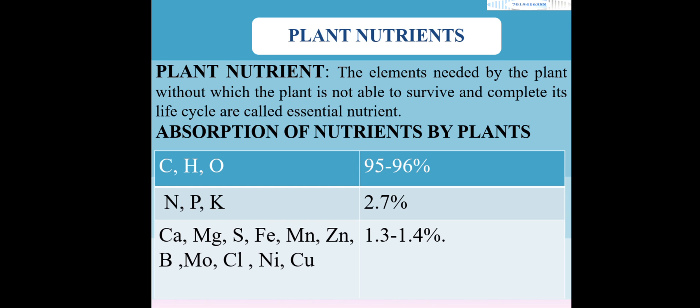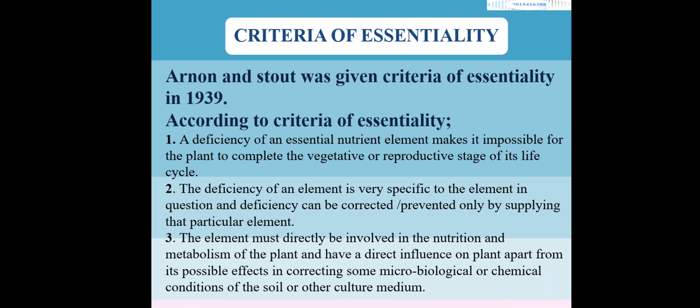All these nutrients combined are required in 1.3 to 1.4 percent out of 100. Next is the criteria of essentiality. Arnon and Stout gave the criteria of essentiality in 1939. According to them, there are more than 90 nutrients, out of which 17 are essential nutrients. They gave three statements by which we can differentiate essential elements from the non-essential elements.